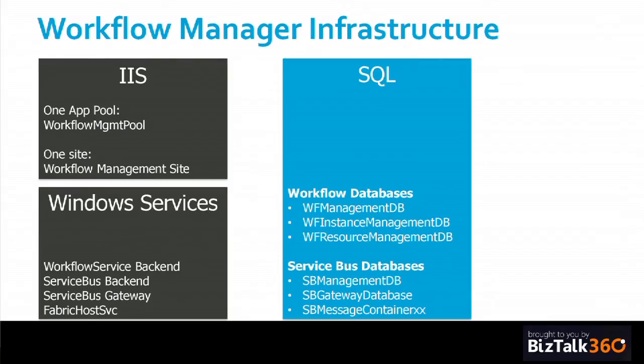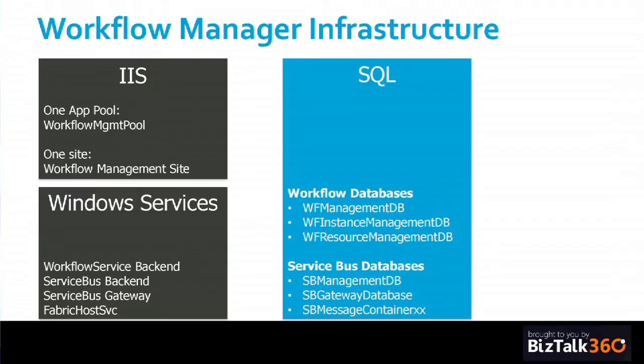The things that get installed: it's in IIS, so you have a new website — the management site — where you start workflows, get workflow state, all through the APIs. You have services — the real engine — just like BizTalk: Service Bus gateway and back-end, and the Workflow Service. All of that runs under the Fabric host service, which is the on-premise version of the cloud runtime. In SQL, you have at least six databases — three for Workflow and three for Service Bus.